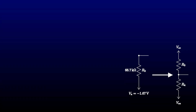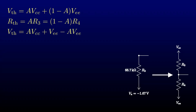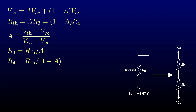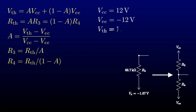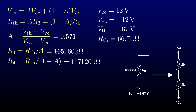We've already derived the equations for Thevenin voltage and resistance, so now let's solve for the division ratio. I have plus and minus 12 volt supplies for running op-amps, and I need a given Thevenin equivalent voltage and resistance. I need a division ratio of 0.571. The top resistor has to be about 155K and the bottom one about 117K. The nearest standard 5% values are 160K and 120K, and I'll go with those.